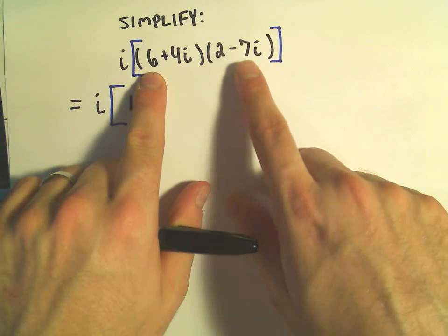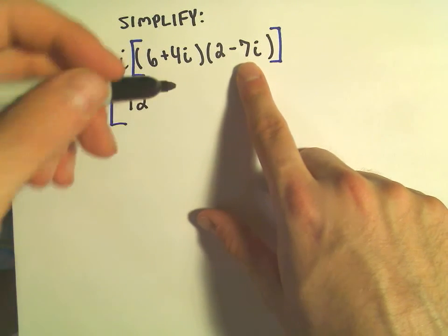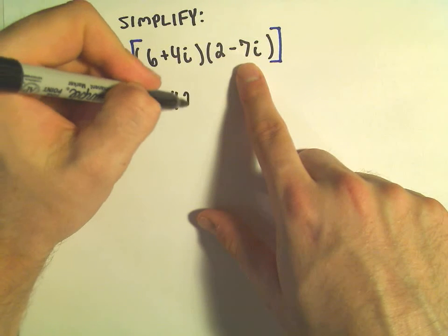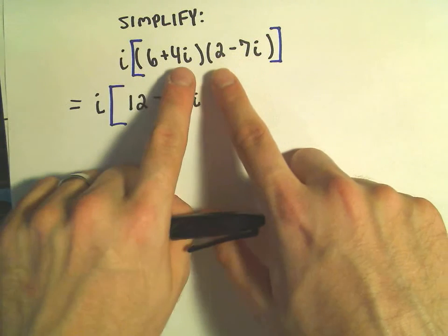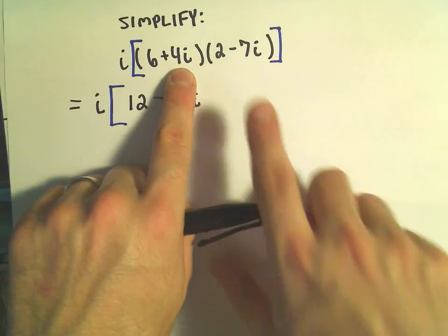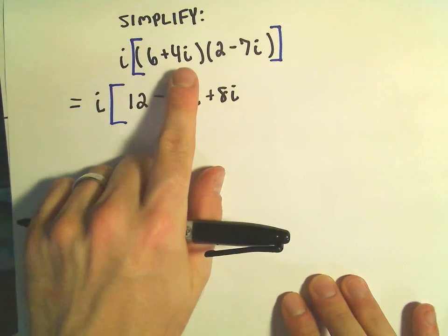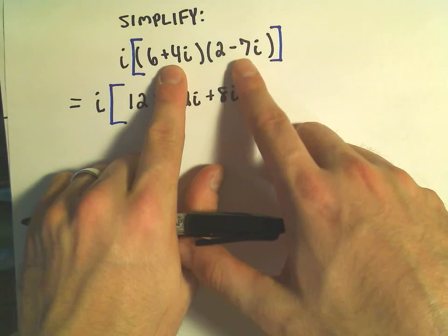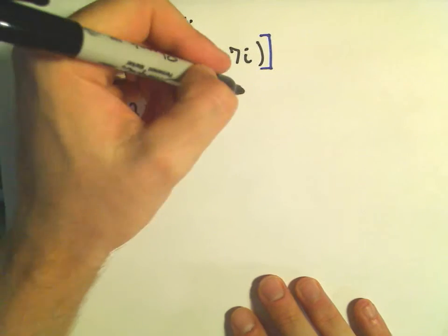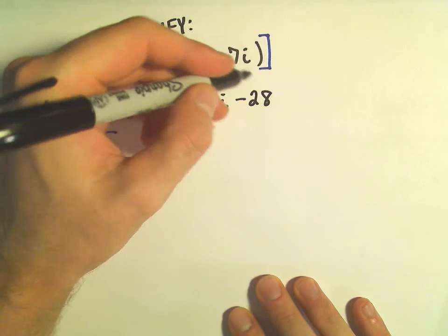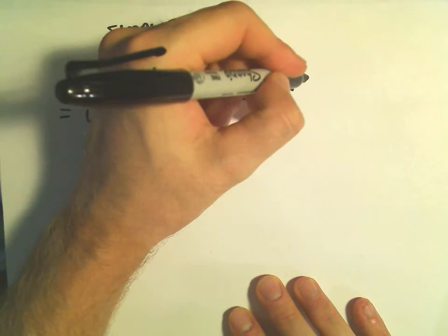We'll get 6 times negative 7i, that'll leave us with a negative 42i. On the inside, when we take 4i times positive 2, that'll give us positive 8i. And then I think positive 4 times negative 7 is going to give us negative 28. Then we have i times i, which is i squared.